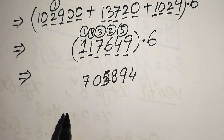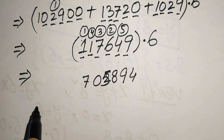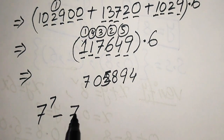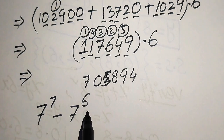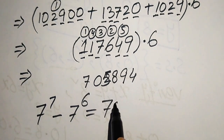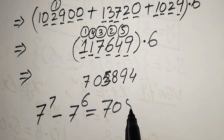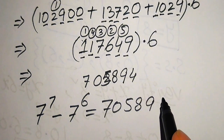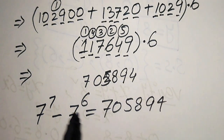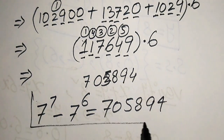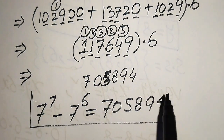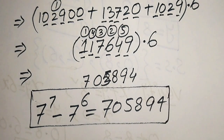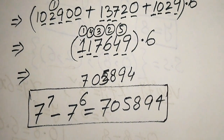So finally, 7 to the power of 7 minus 7 to the power of 6 equals 705,894. This is the final simplified form of the given expression, and this is our final answer.